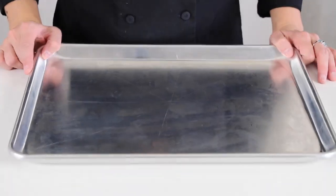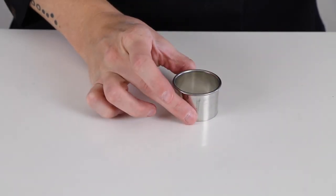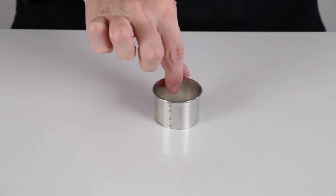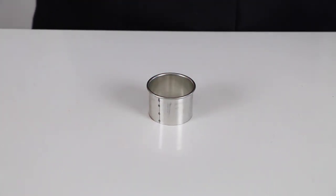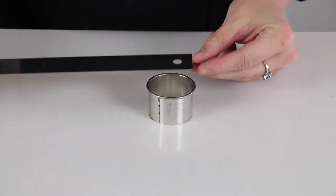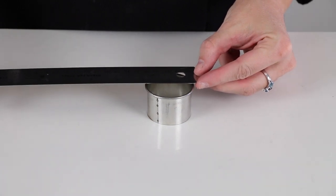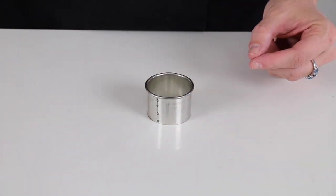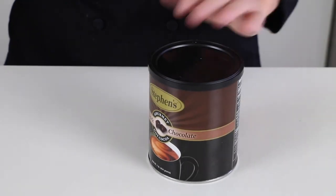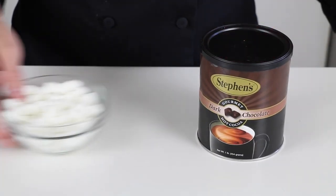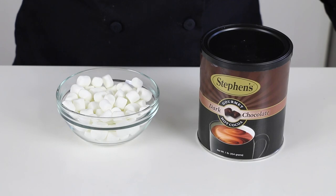A sheet tray. A small round cookie cutter. This will help you with assembling the cocoa bombs. Mine's about 1 and 3 fourths inches diameter. And some hot chocolate powder and anything else you want to hide inside like marshmallows.